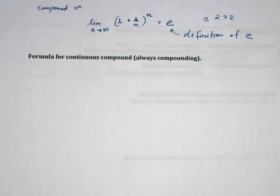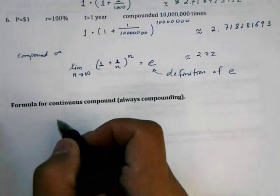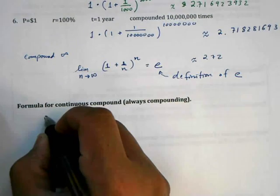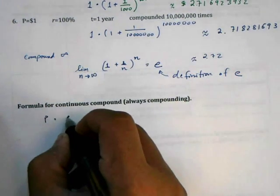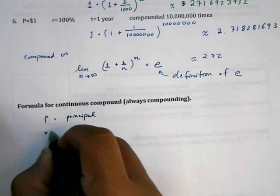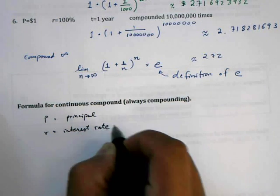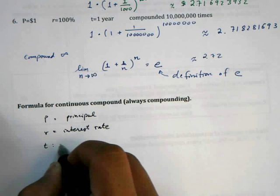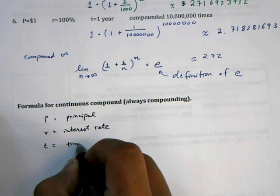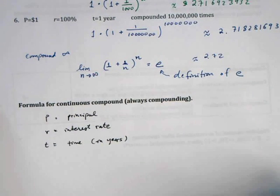Let's talk about some generic cases. We'll let P be the principal, the initial amount invested. R be the interest rate. T be the time, and we'll say it's in years, doesn't really matter, but we'll just say in years.